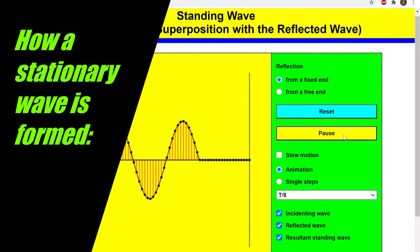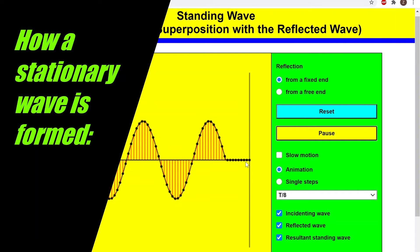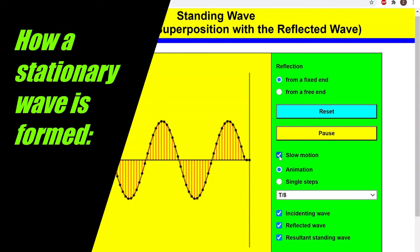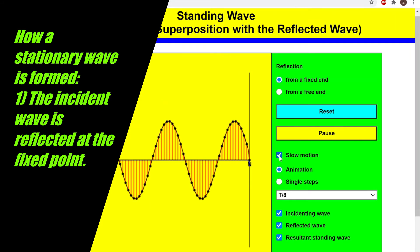But our progressive wave is nearly at the fixed point. Let's see what happens. At the very moment when our progressive wave is about to strike the fixed point, we're going to see that the incident wave is being reflected.